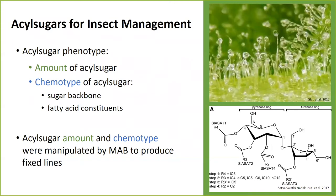Traditionally that system is managed by insecticides, but there could be an alternative. Acyl sugars are foliar secondary metabolites — they're insect-resistant metabolites — and they're accumulated in particularly high quantities by wild species in Solanaceae. Here we see some type 4 trichomes with droplets full of acyl sugars.